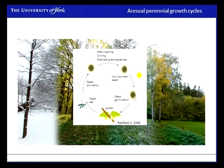Dormancy levels are initiated during seed maturation and this can be regulated by both temperature and photoperiod. This is important because dormancy prevents germination if the conditions aren't favourable. The dormancy is broken by after-ripening, chilling, or alternating temperatures, and then the non-dormant seed is sensitive to light and is able to germinate.